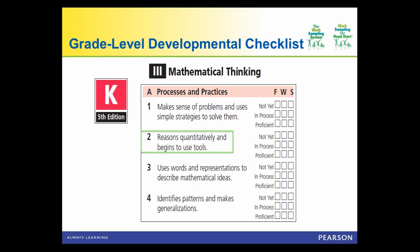Here is the kindergarten developmental checklist for mathematical thinking. For a specific indicator like reasoning quantitatively and beginning to use tools, the developmental guidelines describe reasonable expectations for a kindergartner. You identify activities or behaviors children might exhibit that lead you to draw conclusions about a child's performance of that skill. For example, to assess whether children can reason quantitatively, ask: what do I expect kindergarten children to be able to do with respect to that indicator?